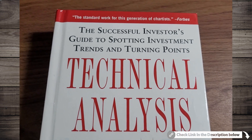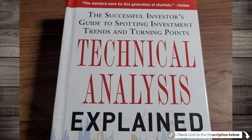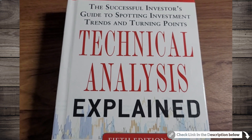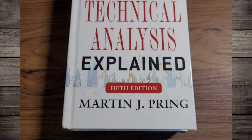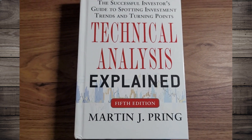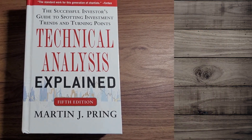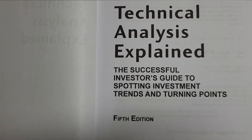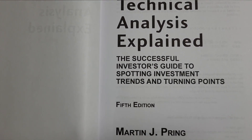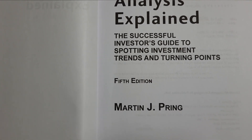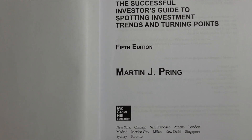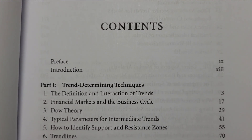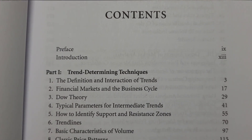Written by the famous financial analyst Martin J. Pring, Technical Analysis Explained is widely regarded as one of the best books for mastering the art of technical analysis and trading systems. With 800 pages, this book is loaded with information and serves as a comprehensive guide, providing insights into the world of trading strategies and helping you develop a solid understanding of technical analysis. It's considered one of the go-to resources for both beginner and professional traders.